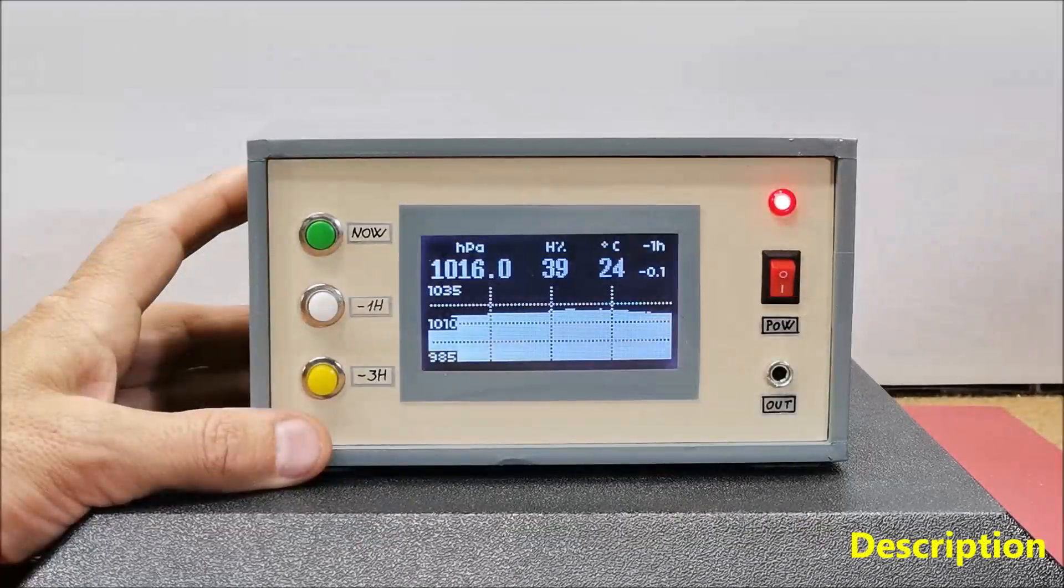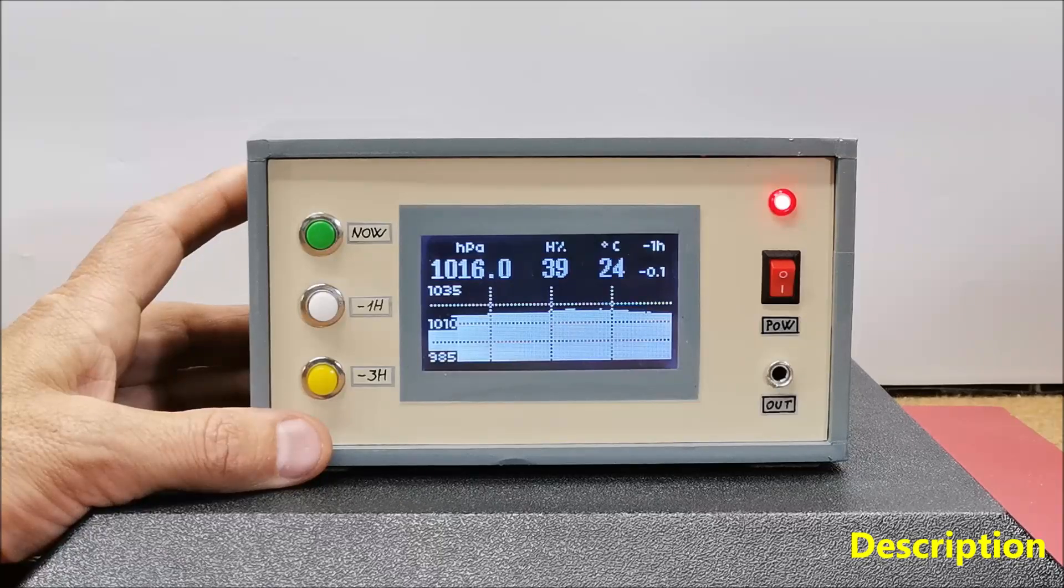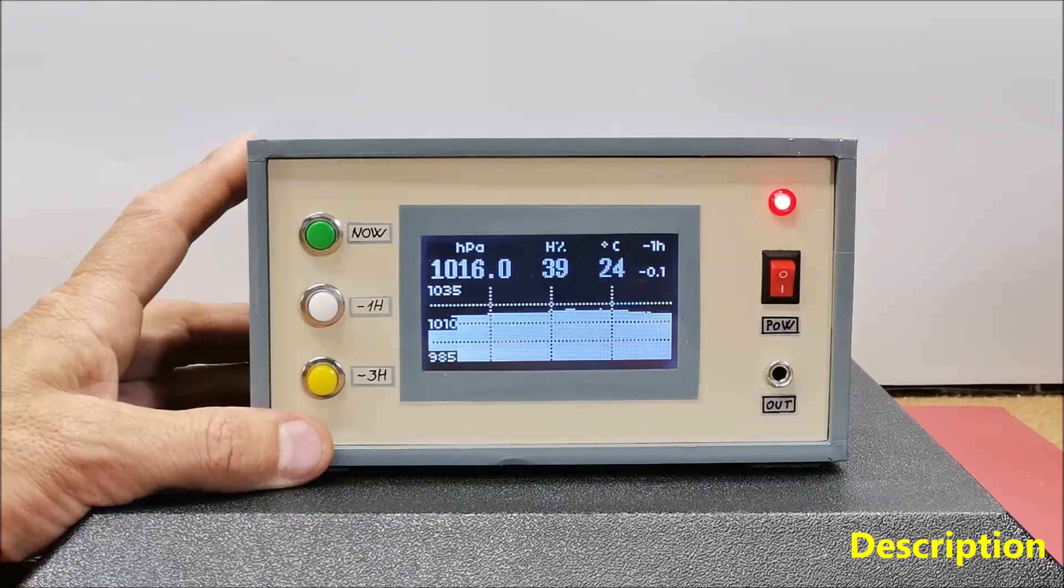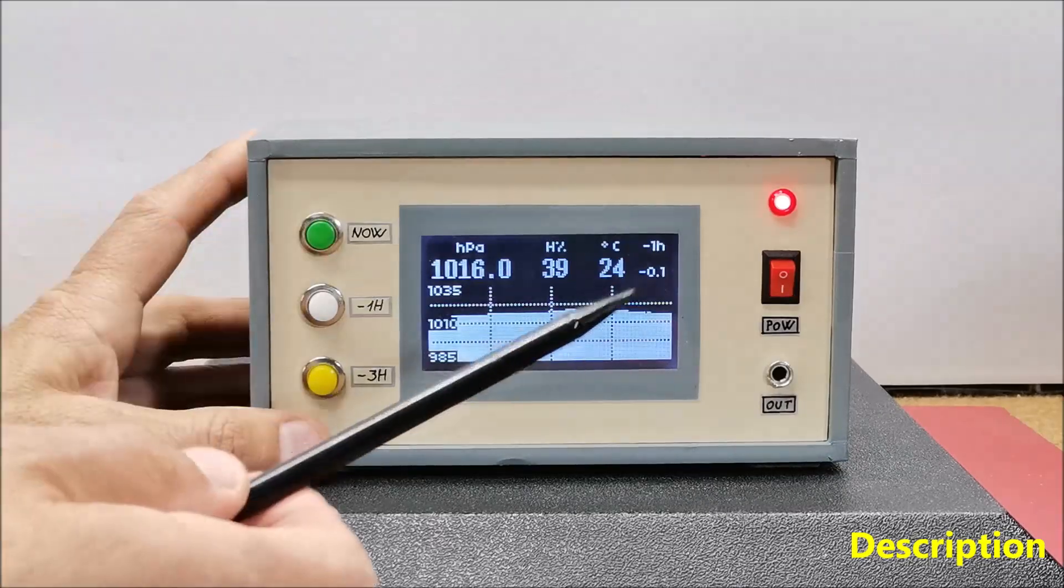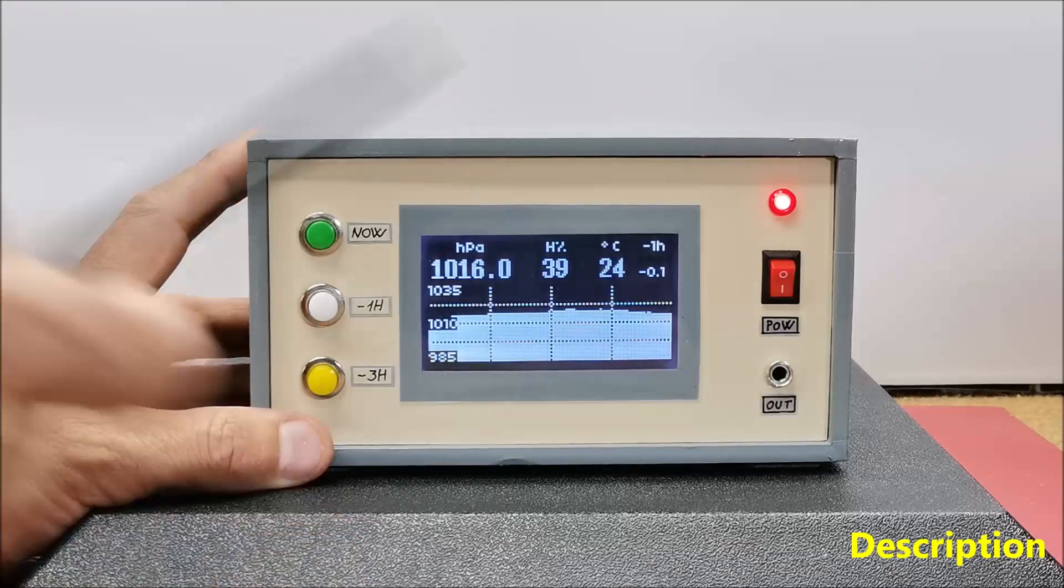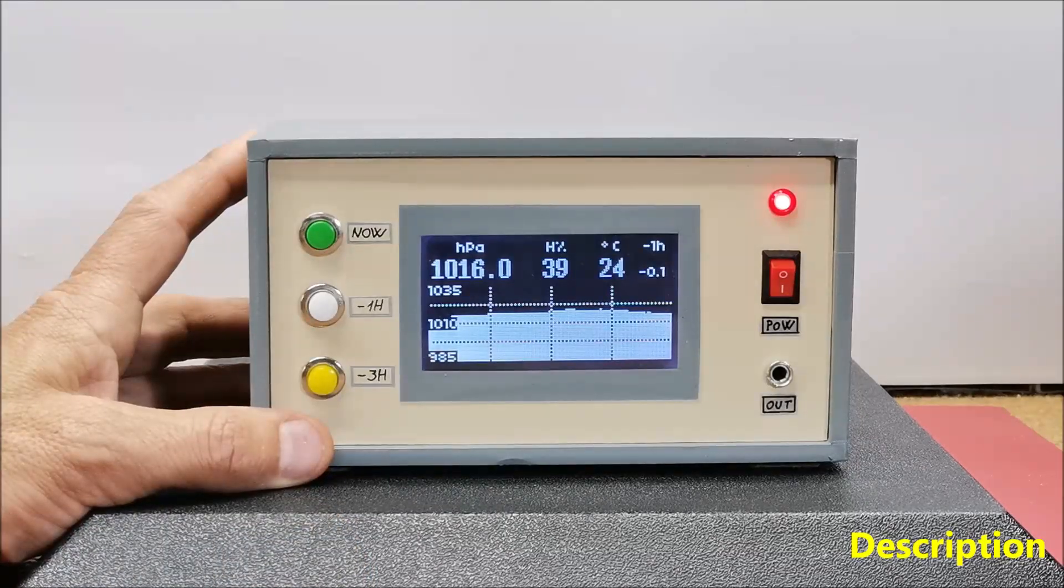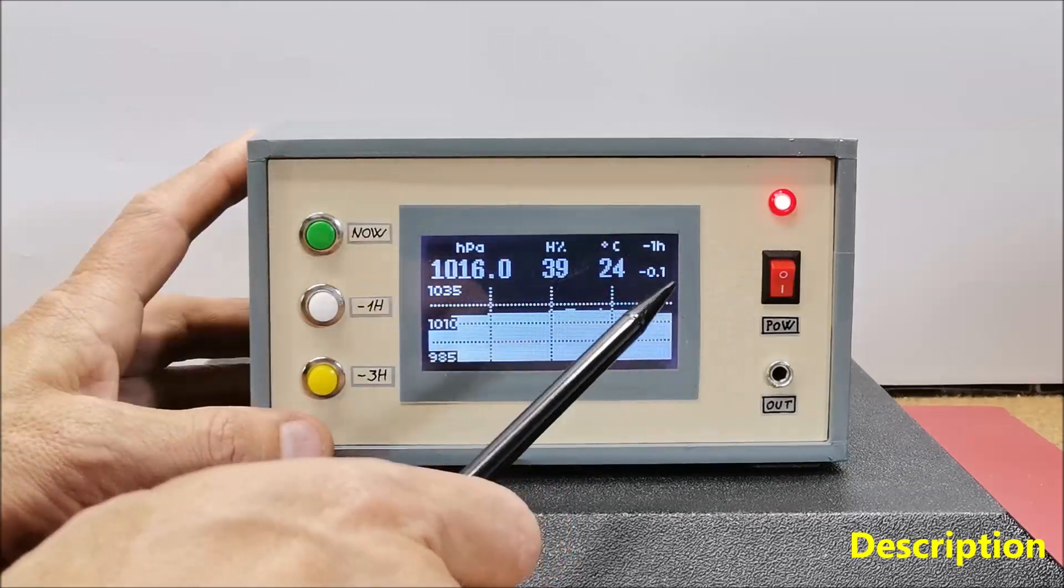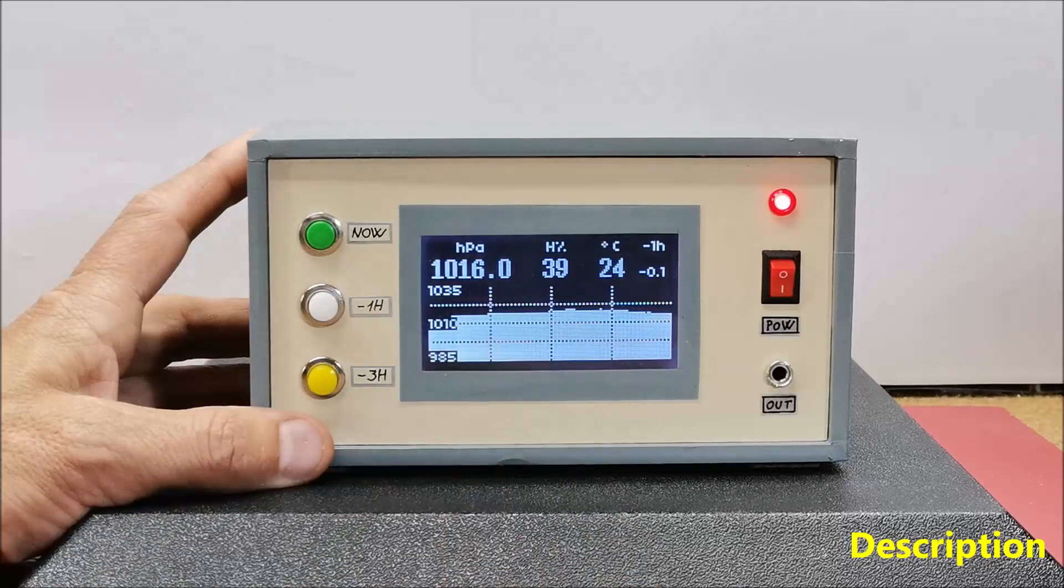Hello, a barograph is a self-recording barometer that continuously measures and records atmospheric pressure over time. It produces a graphical record of the pressure changes on a paper chart called a barogram. The device presented in this project is an electronic barograph and a barogram is drawn on a LCD display instead of on paper.